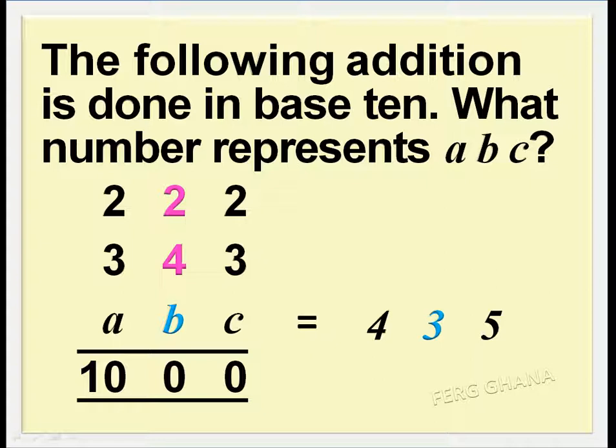The 1 plus 2 plus 4 gives us 7, so we need 3 to top it up to make it complete, so B equals 3.